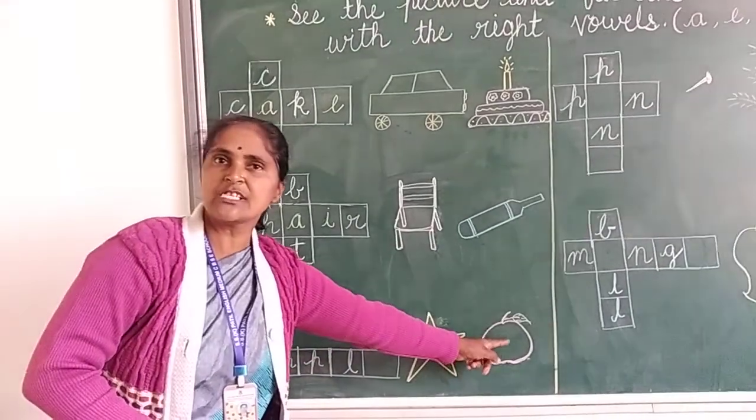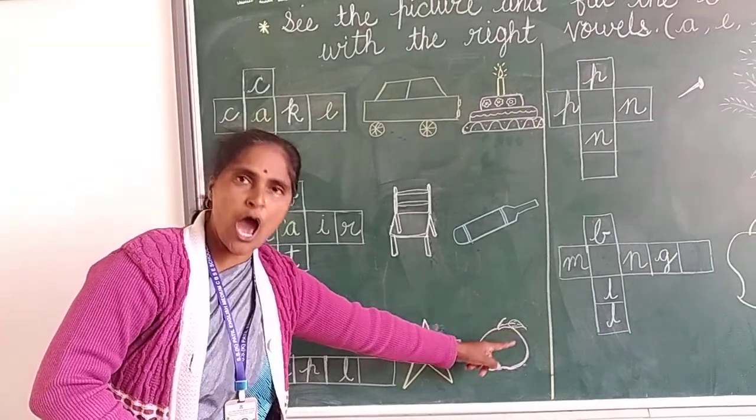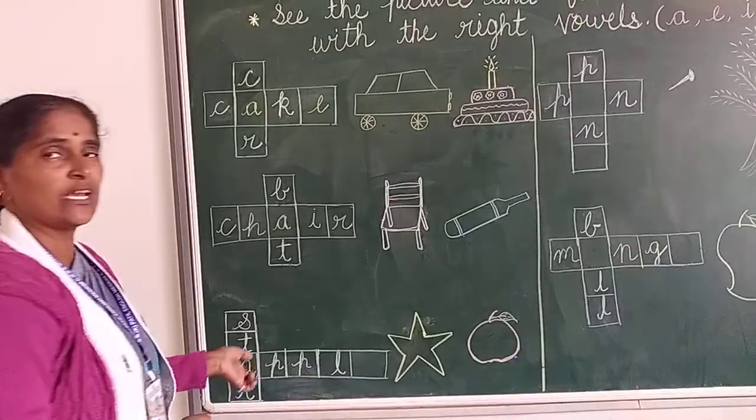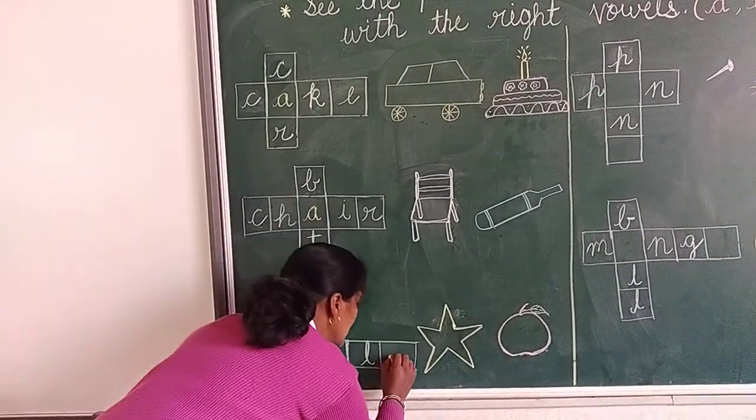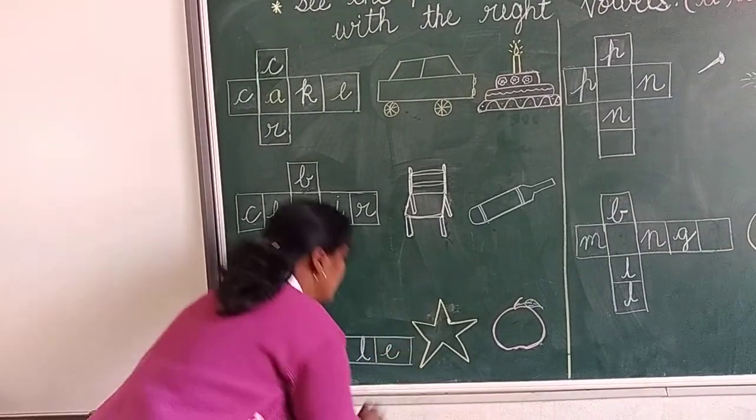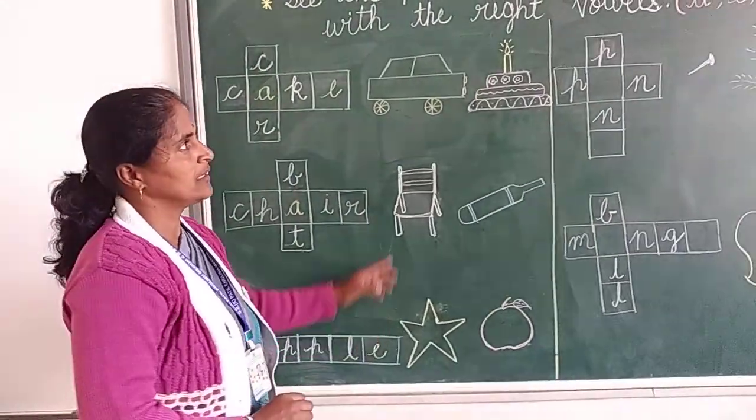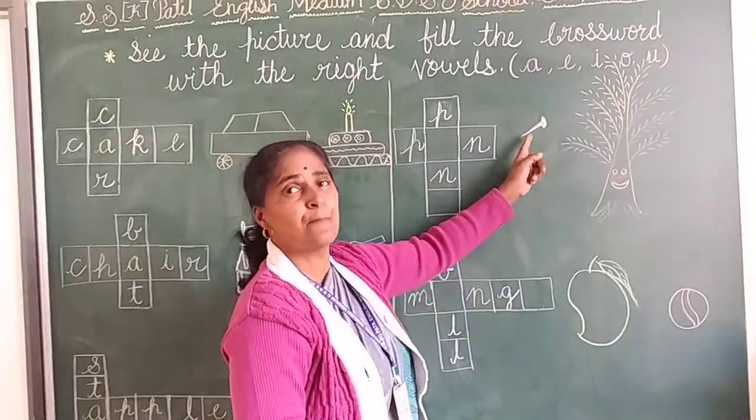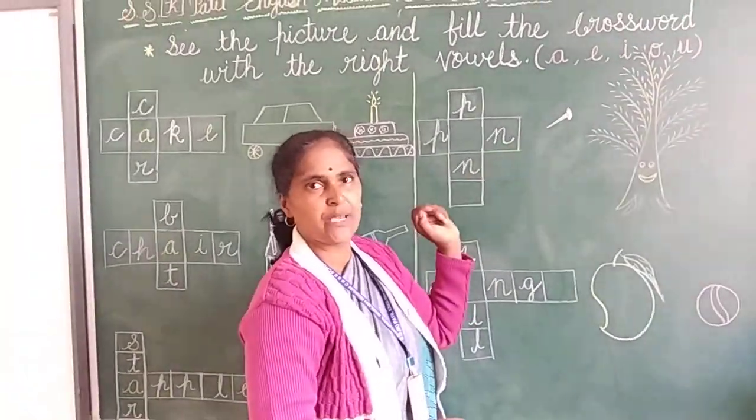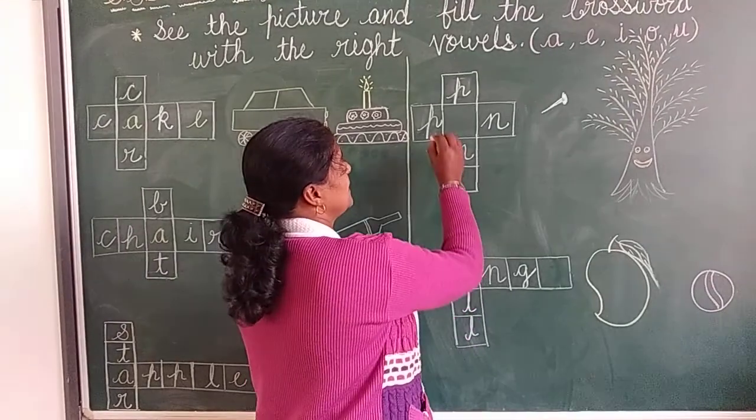Now which is this picture? This is an apple. What is the spelling of apple? A-P-P-L-E. Apple. Next, see what is this? This is a pin. What is the spelling of pin? P-I-N. Pin.